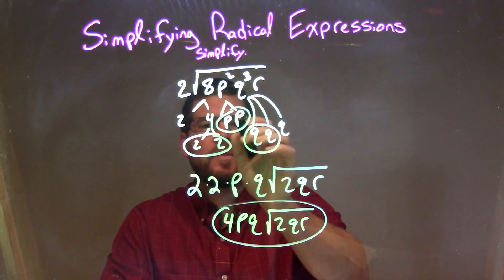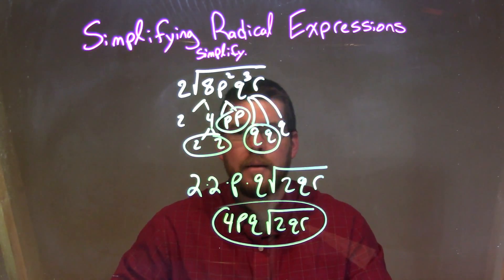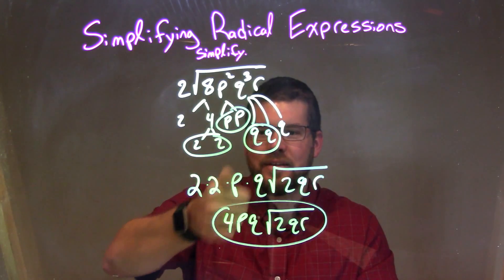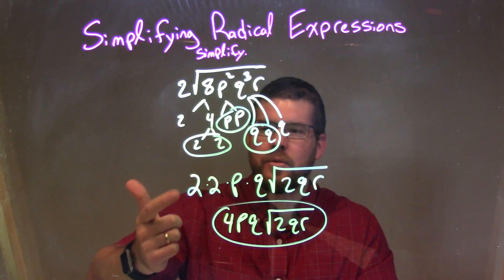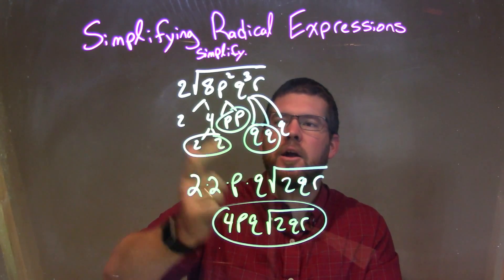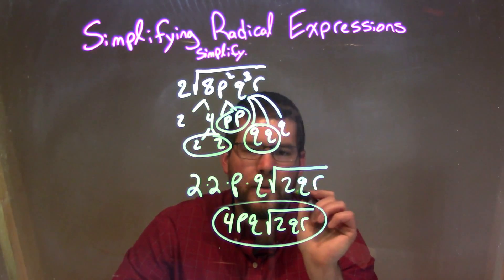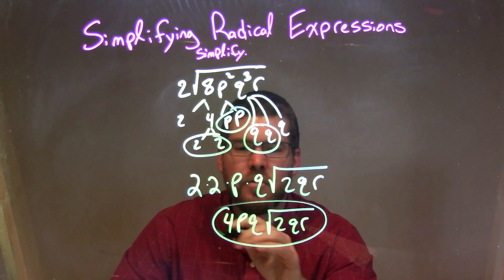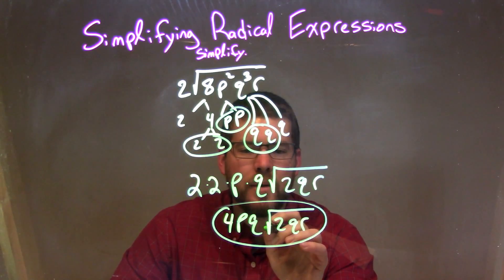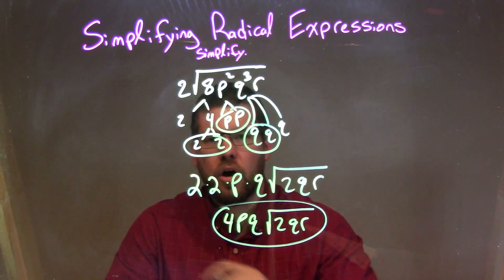Circle our pairs: pair of 2s, pair of p's, pair of q's. All the circled pairs represent a single on the outside. That 2 was still there, so we have 2×2×p×q. All the ones that did not have a pair stay inside the square root: 2qr. Simplify that to get the final answer of 4pq times the square root of 2qr.